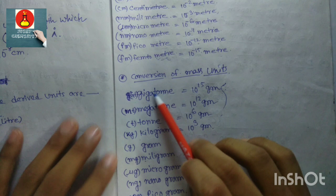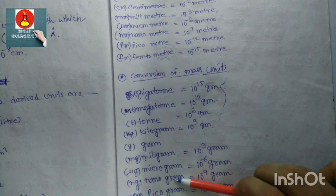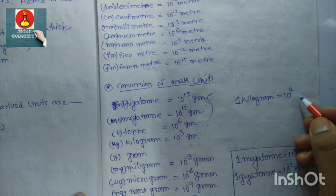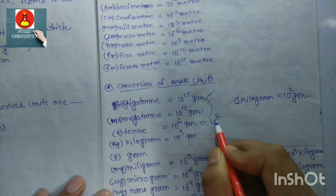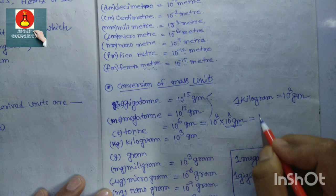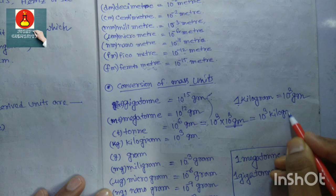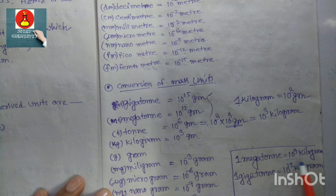Now conversions of mass units: gigaton, megaton, ton, kilogram, gram, milligram, microgram, nanogram. One kilogram equals 10³ grams. So 1 megaton equals 10⁹ kilograms and 1 gigaton equals 10¹² kilograms.